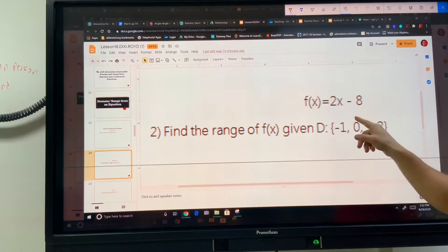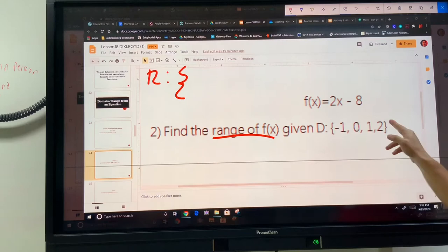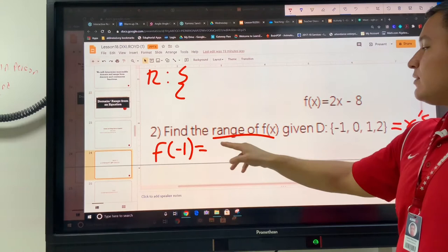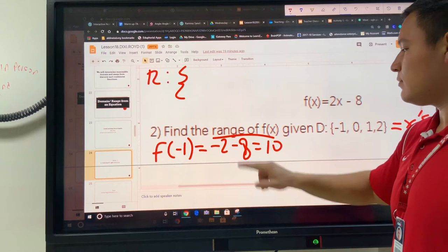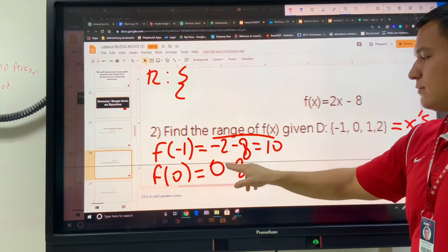We'll do one more example together, and then you'll have to do some on your own later. Find the range, so we're going to have to make a set for r again, given the domain. These are the x's. We're going to plug in negative 1. f of negative 1 will be 2 times negative 1, which is negative 2, minus 8, which makes negative 10. The next one we have to do is 0. That's going to make 2 times 0 is 0, minus 8, which makes negative 8.